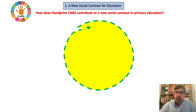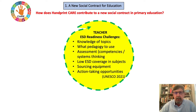The first is a call for a new social contract for education. Here we asked in our handprint work: how does handprint care contribute to a new social contract in primary education? The UNESCO work with teachers and barriers to readiness for ESD covered much of the same ground as the work that we'd experienced with teachers.